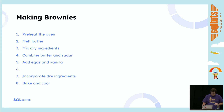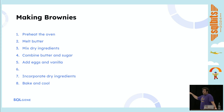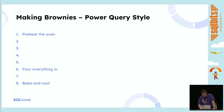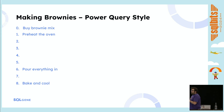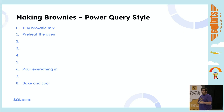Power Query is lazy. If it can get somebody else to do the work, then it's going to do that instead. You say, hey, make some brownies, here's the recipe. And it says, what if I just go to the grocery store and buy some brownie mix? What if I don't even have to do any of the steps? And that brownie mix is called query folding. If you're pulling data from a data source that supports it, Power Query will actually integrate those steps into the query.